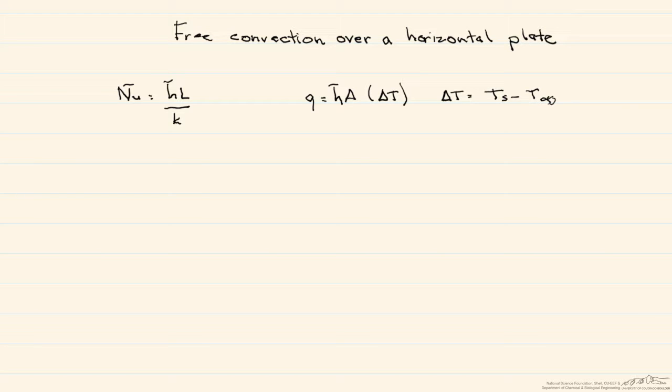Free convection flow over a horizontal plate does not have just one correlation for the Nusselt number. We have four different possibilities. The first thing we have is a plate whose temperature is higher—its T surface is greater than T infinity—and we call this a heated plate.